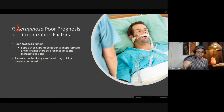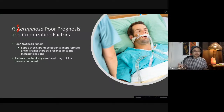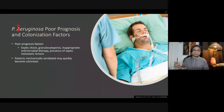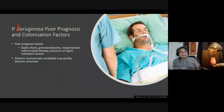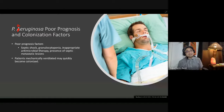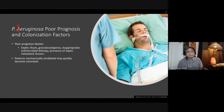Pseudomonas aeruginosa has poor prognosis factors including septic shock — where bacteria in the blood causes a drop in blood pressure — granulocytopenia, meaning a significant drop in the number of granulocytes, which are important WBCs for immune defense, inappropriate antimicrobial therapy or wrong use of antibiotics, and presence of septic metastatic lesions, meaning the infection can spread easily.